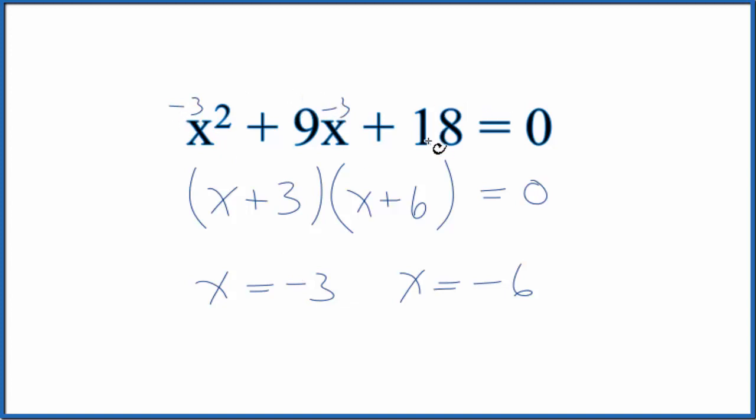If you put these numbers in for x, -3, and you multiplied everything out, it would equal 0. Likewise if you put -6 in for x and multiplied everything out, you would get 0 as well. If you use the quadratic equation you get the same answer.